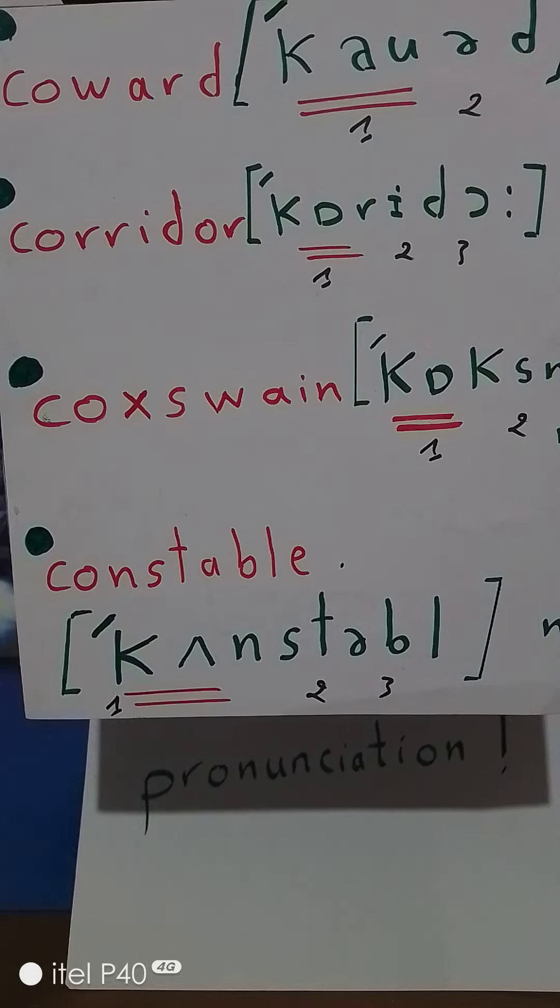A coward is someone who is lacking courage. Coward has two vowel sounds with stress on the first vowel sound. The second word is corridor.